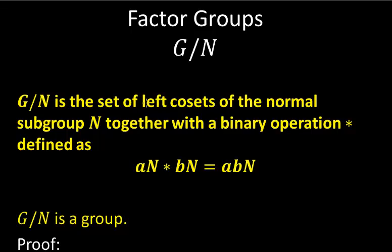Factor groups G mod N. G mod N is the set of left cosets of the normal subgroup N together with a binary operation defined as we did in class. You take one coset AN star BN and it's ABN, the other coset where AB stands on the outside. If N is normal, then G mod N is a group.